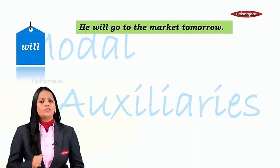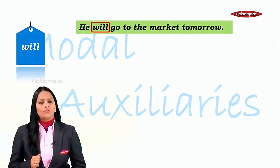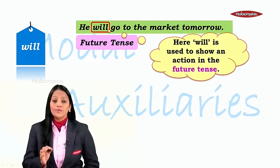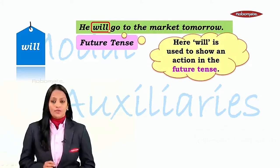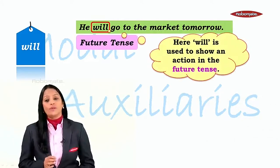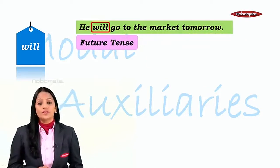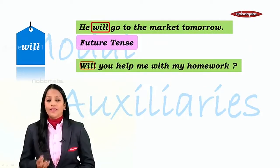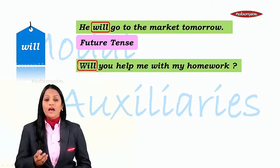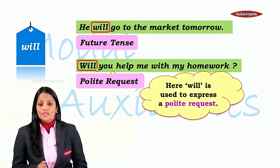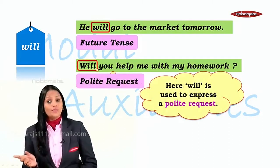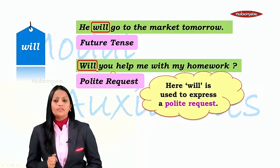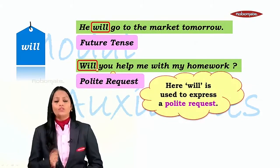Okay, 'He will go to the market tomorrow.' Simple — it just expresses the future tense. So 'will' is used to express the future tense. Next: 'Will you help me with my homework?' Again, it sounds like a polite request. We've already seen polite request earlier with 'could', and now we see 'will' can also be used as a polite request.